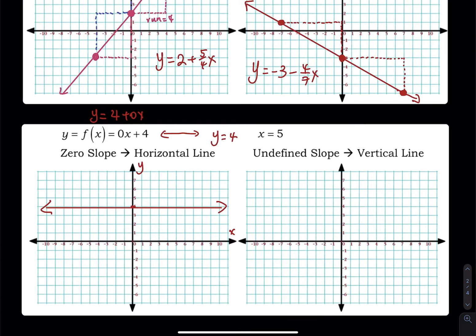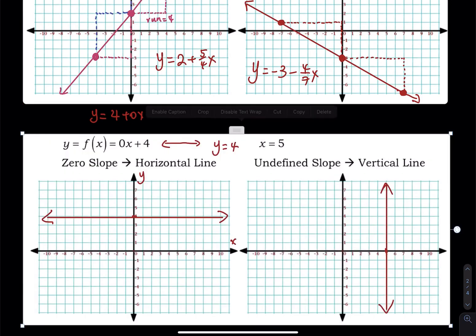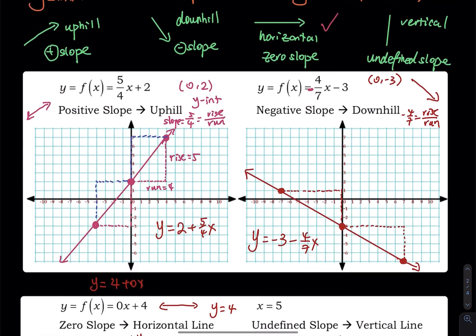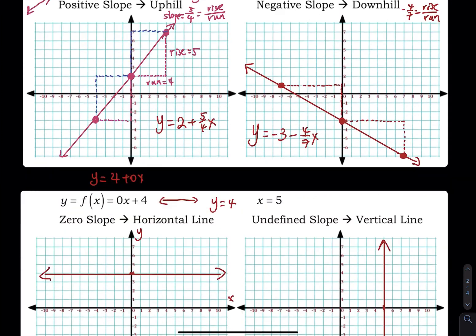The last one is x equals 5. There is no y, so that is clearly a vertical line with an undefined slope. To draw it, just go straight up and down at x equals 5. For the driving analogy: you can't drive on a vertical line — that's impossible. You can drive on a horizontal line. A negative slope is like going downhill; a positive slope requires pressing the gas to go up. That is the review of the four types of slope.